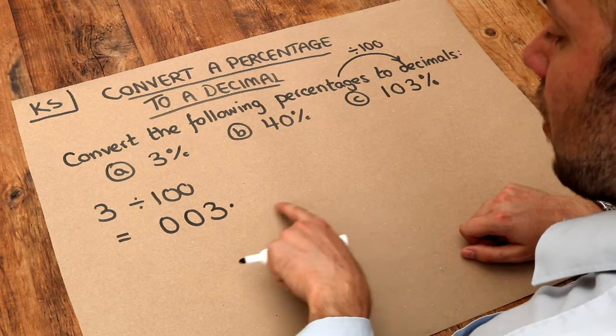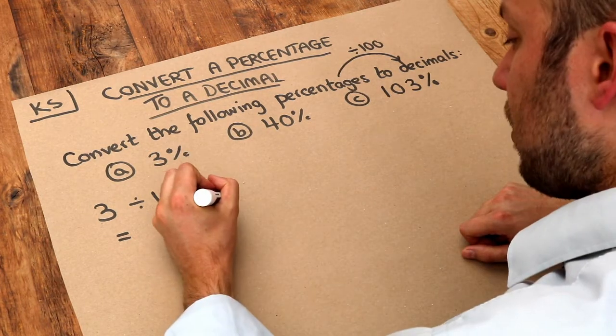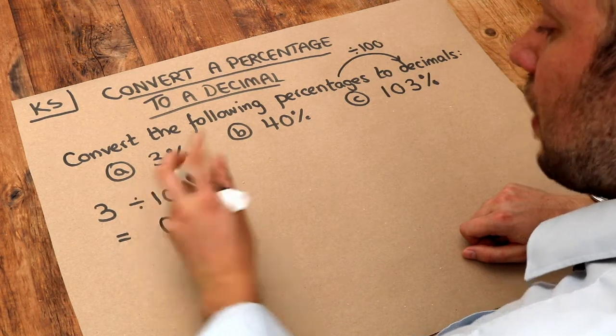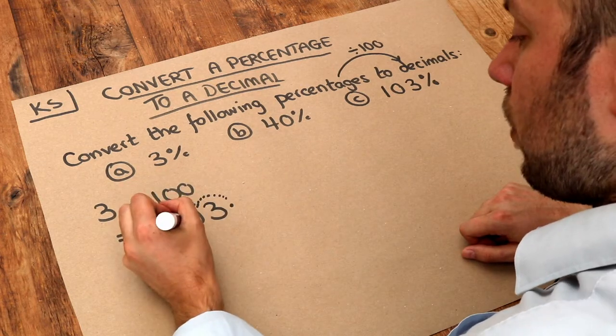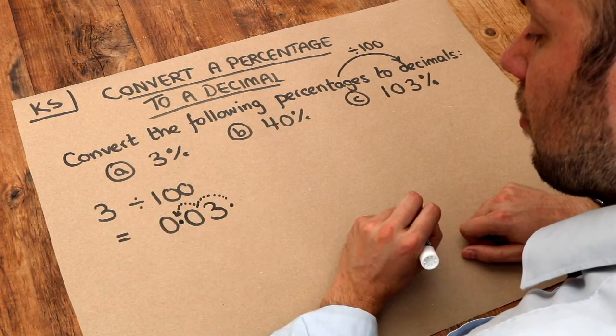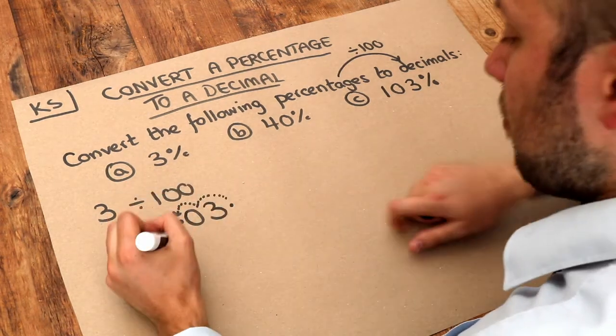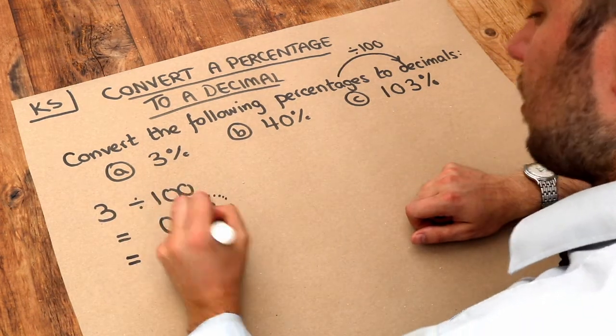So now by dividing by 100, I can move this decimal point two places to the left because 100 has two zeros. And now we've got 0.03. So let me just write that clearly - without that decimal point at the end, it's just 0.03.